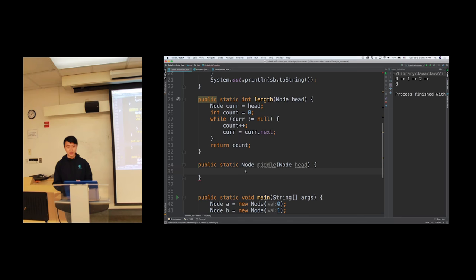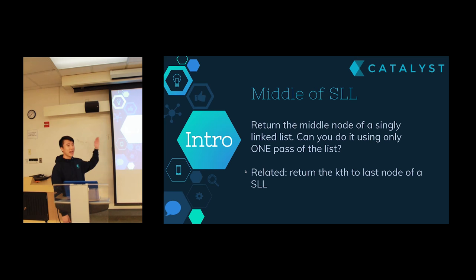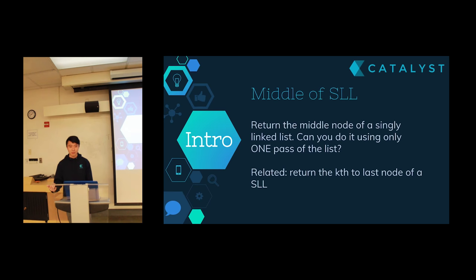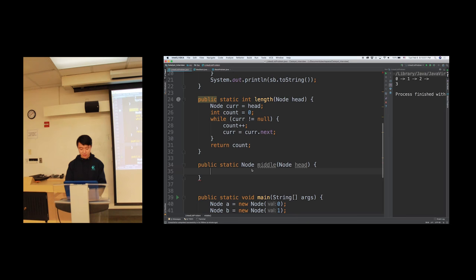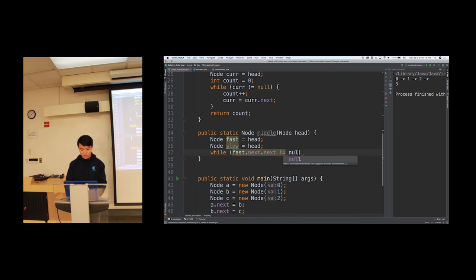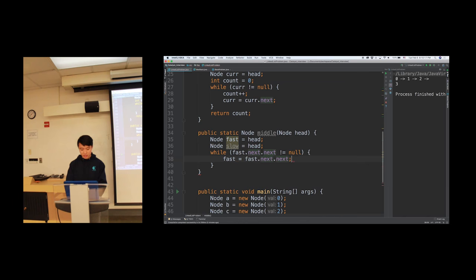One of our goals is to do it in only one pass. A student suggested using a fast and slow pointer approach. So let's define: node fast = head, node slow = head. Then while fast.next.next is not null, fast = fast.next.next, and slow = slow.next. Then return slow.